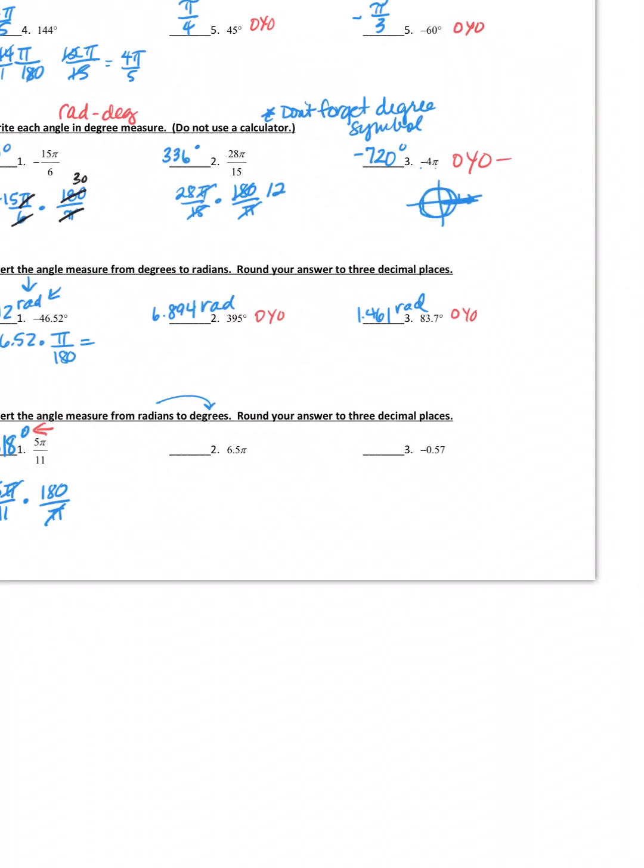Let's try the next one. You can do this on your own. 6.5π times 180 over pi. The pi should cancel out, and I'm just going to use my calculator to multiply 6.5 times 180. When I do, I get 1170 degrees. Number three, try this one on your own. Pause the video, try it, and see if you get what I got. And what I got was negative 32.659 degrees.